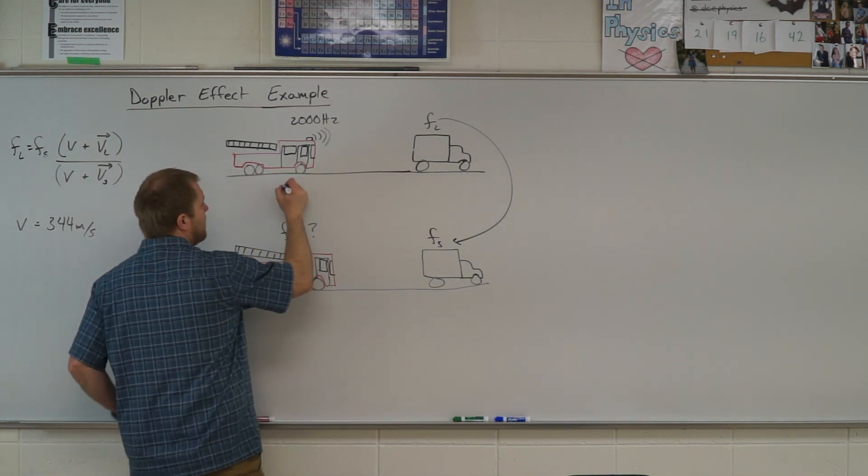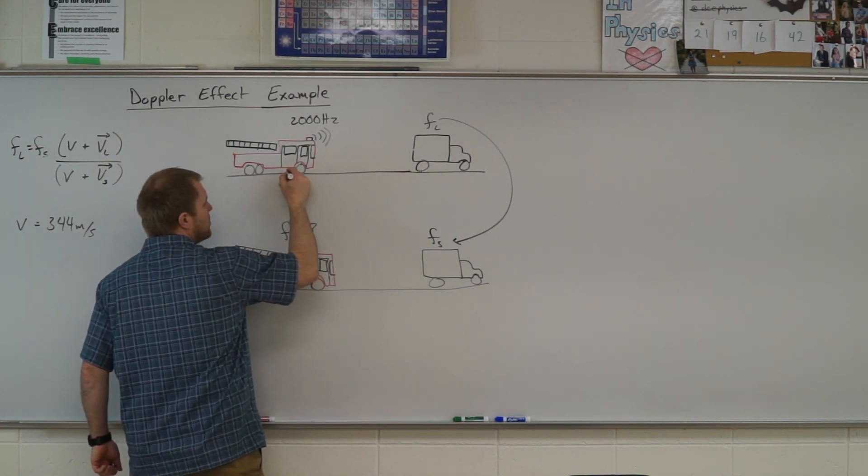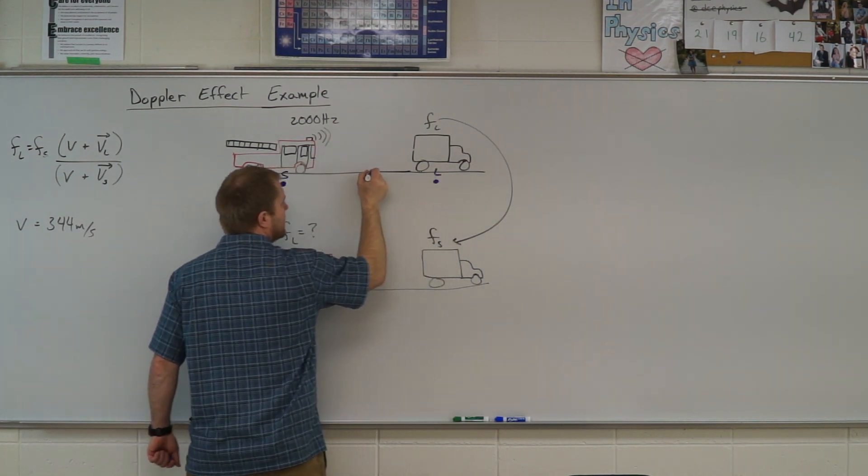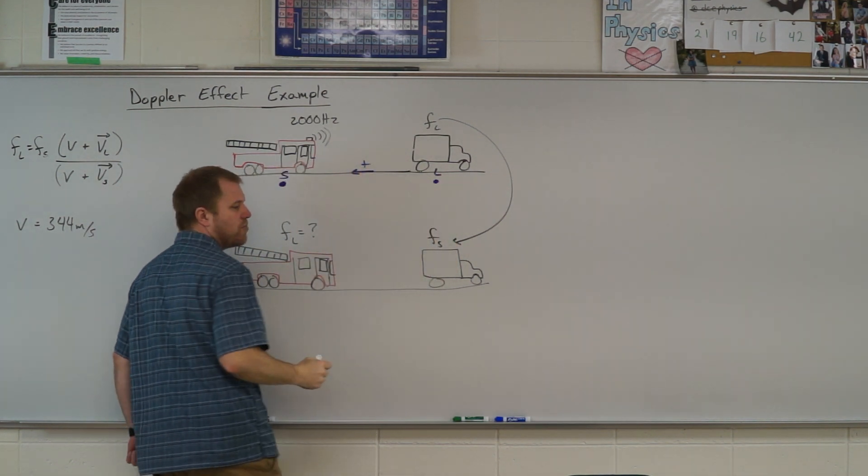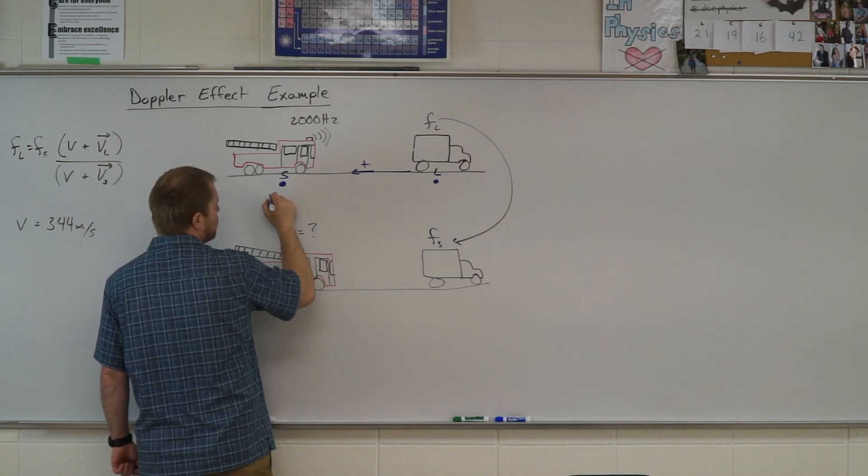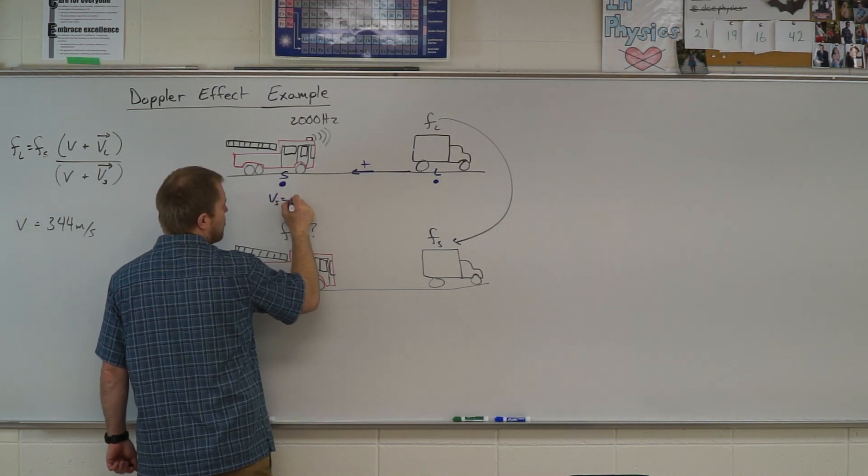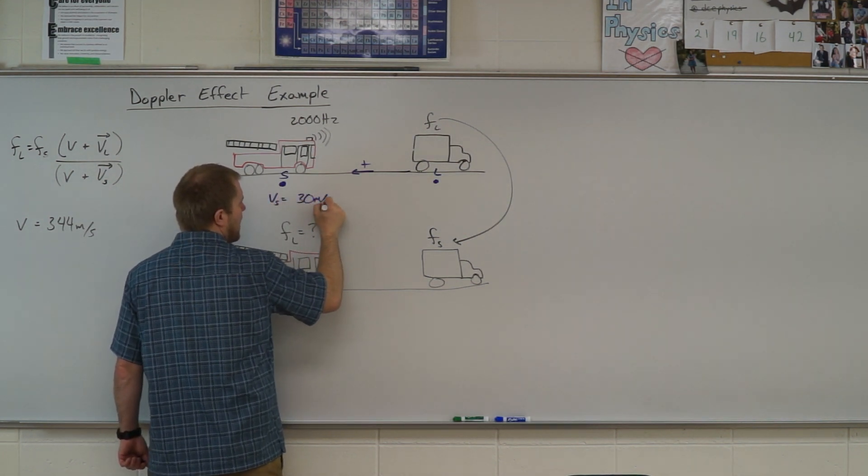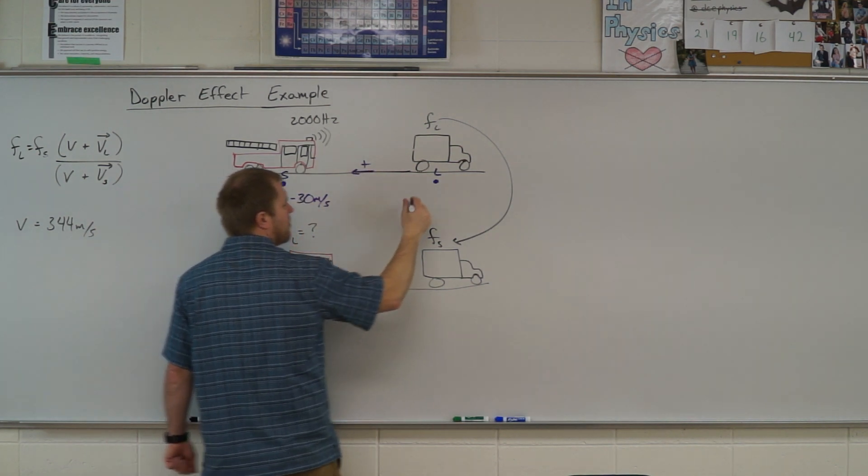So we're going to have to identify our objects. I have my source and I have my listener. Velocity from listener to source is my positive direction. They said that the truck was moving at 30 meters per second and it's moving in my negative direction.